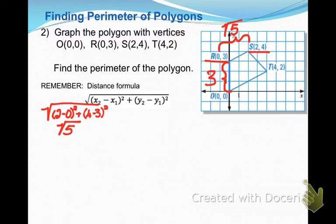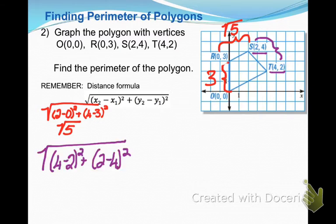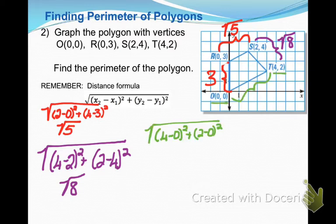I'm then going to do that same process using the distance formula with these 2 vertices to find the length of side ST. Alright, so I'm going to subtract my x values, square them, subtract my y values, square them, add them together, and take the square root. When I do that, I get that that side length is square root of 8. And when I do that exact same thing on my last side TO, I get a length of square root of 20.